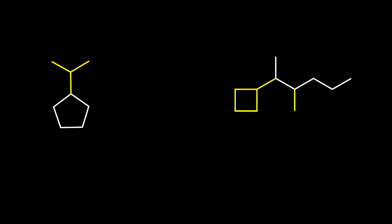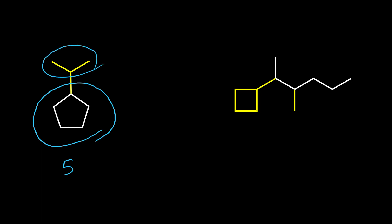I'm going to start by explaining how we can name cycloalkanes with two examples. For the first step we need to identify the parent. To identify the parent you need to count the number of carbons in the ring and also in the largest chain. For this compound we have five carbons in our ring and only three carbons in the substituent, so the parent in this compound is the ring.